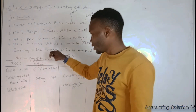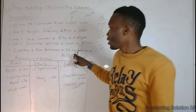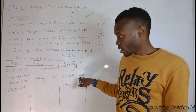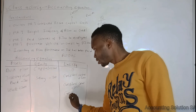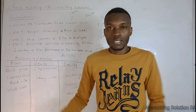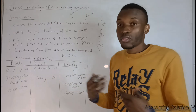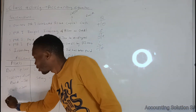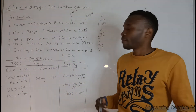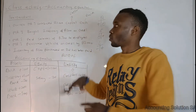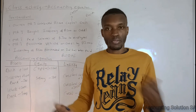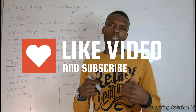Transaction 5: The inventory of R500 purchased on credit on the second has now been paid. We reduce the liability because we paid it, and we pay through the bank, so bank gets minus R500 and creditors control also reduces. That is how you prepare your accounting equation. Thank you so much for watching — please share with friends, like and subscribe. See you on the next one!